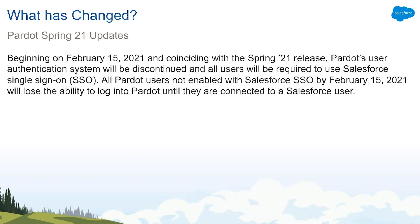All Pardot users not enabled with Salesforce single sign-on, or SSO, by February 15, 2021, will lose the ability to log into Pardot until they are connected to a Salesforce user. This change will not have any impact on Pardot features or change the level of access that any particular user has — it only impacts the way in which users authenticate to Pardot.